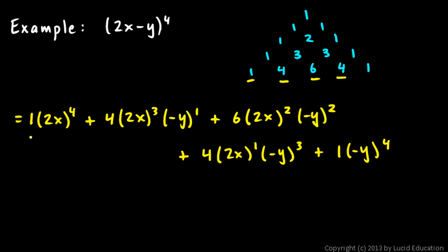And then we just need to simplify each of these terms, and that's not too hard to do. So starting here, this 2, remember, is raised to the 4, as well as the x. So this is 2 to the 4th, which is 16. So 16x to the 4th.